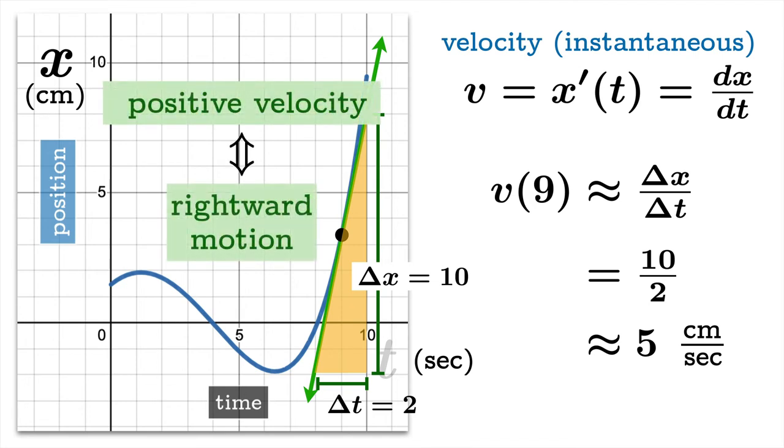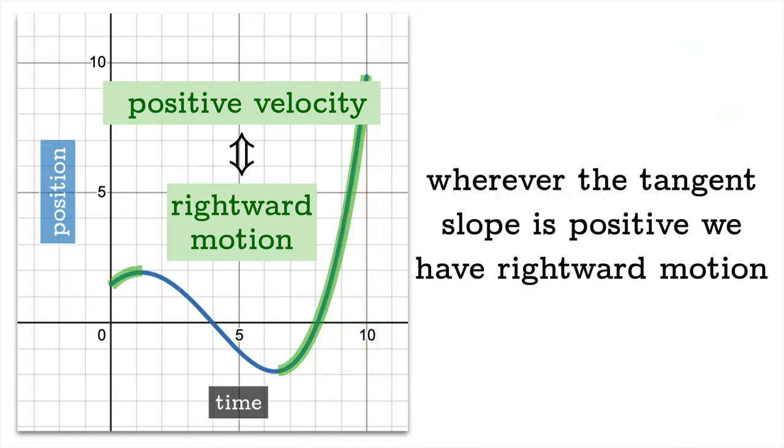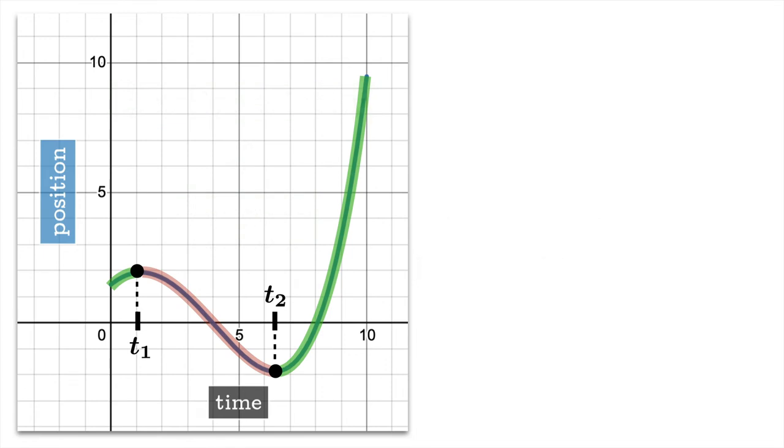Positive velocity is going to correspond to rightward motion. And wherever the tangent slope is positive we have rightward motion. So in this graph we can now really see which parts of the graph correspond to rightward motion, which parts correspond to leftward motion, because of the tangent slopes, the sign of the tangent slopes helping us really figure out which way is which.